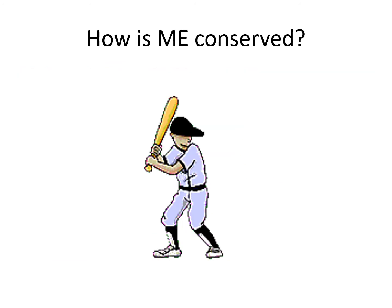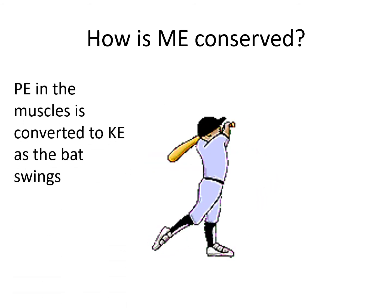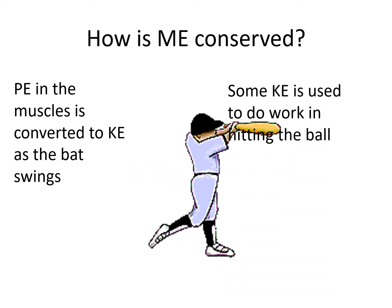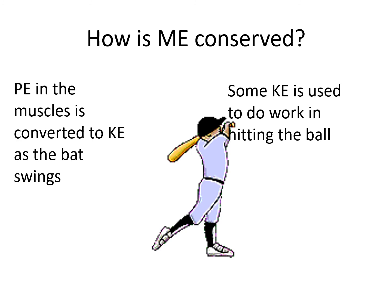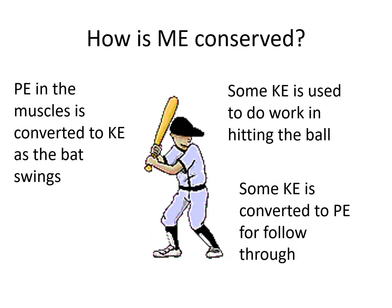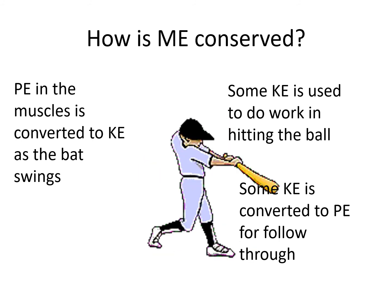How is mechanical energy conserved when a baseball bat hits a ball? Potential energy in the muscles is converted to kinetic energy as the bat swings. Some kinetic energy is used to do work in hitting the ball, while some of the kinetic energy is converted to potential energy to follow through.